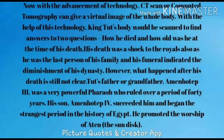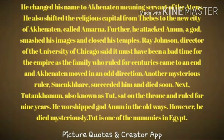Tut's father or grandfather, Amenhotep III, was a very powerful ruler who reigned for 40 years. His son Amenhotep IV succeeded him and began the strangest period in the history of Egypt. He promoted the worship of Aten, the Sun disk. It is believed that Amenhotep IV changed the worship of God, and then changed his name to Akhenaten, meaning 'servant of Aten.' He also shifted the religious capital from Thebes to the new city of Akhenaten, called Amarna.